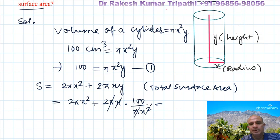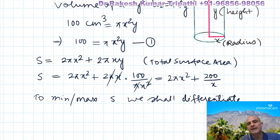Now we start our procedure. To minimize S we differentiate S with respect to x. So dS/dx = 2π · 2x + derivative of 200/x. Taking 2π as constant, the derivative of x² is 2x, giving 4πx. The derivative of 200/x, written as 200·x^(−1), is −200/x².